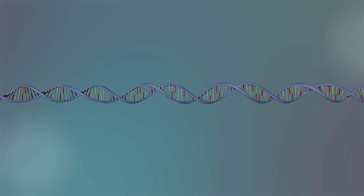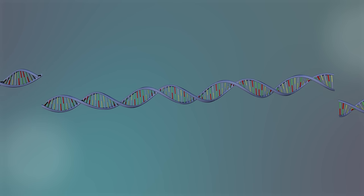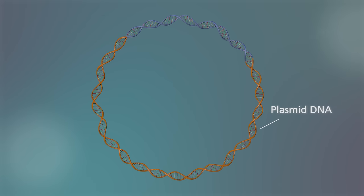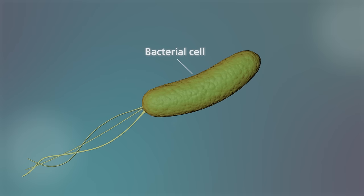Before we can sequence the DNA, it has to be cut up into smaller pieces that are inserted into plasmid DNA and then put into bacterial cells.